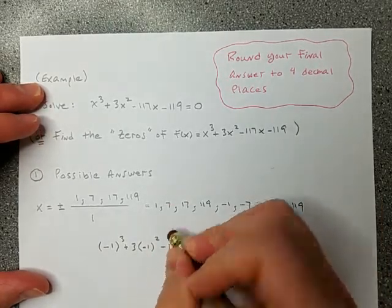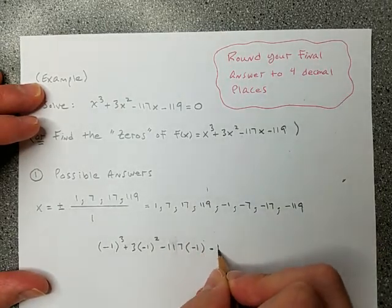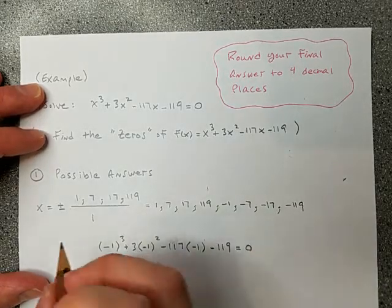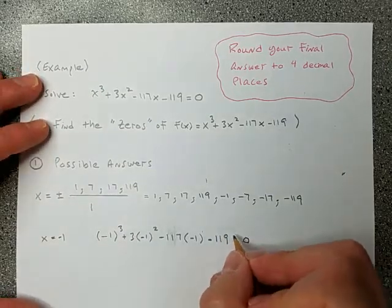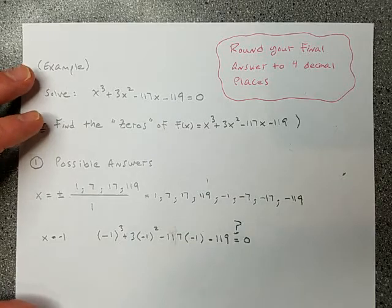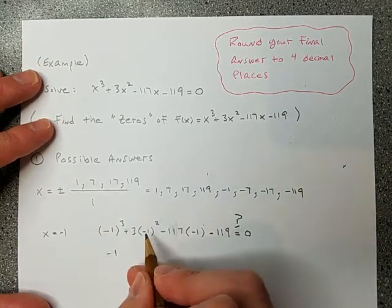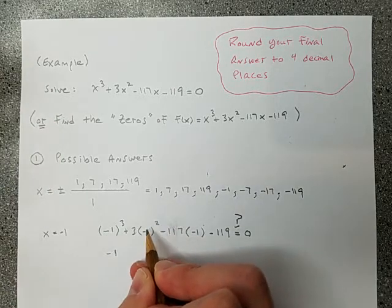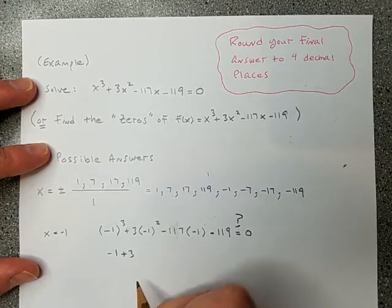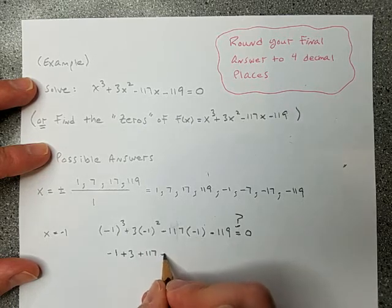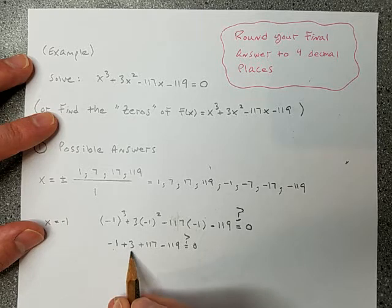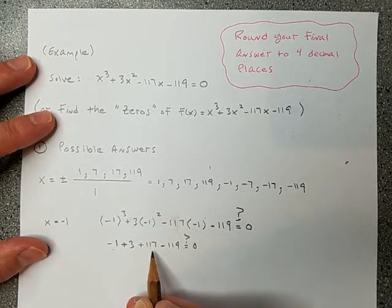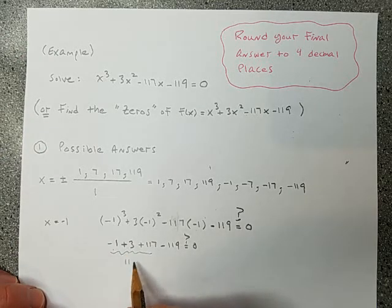I'm going to write this out on paper so you know what it looks like, but I'll also show you how to type it in your calculator to make it faster. Is negative 1 an answer? Plugging negative 1 into the equation: negative 1 to the third power is negative 1; negative 1 squared is 1, times 3 is 3; negative 1 times negative 117 is 117; minus 119. Then: negative 1 plus 3 is 2; 2 plus 117 is 119; 119 minus 119 equals zero. It works!